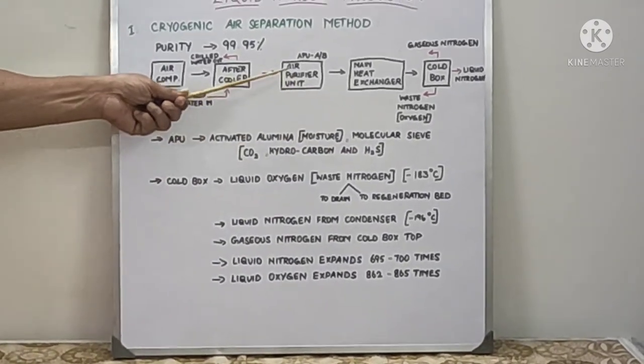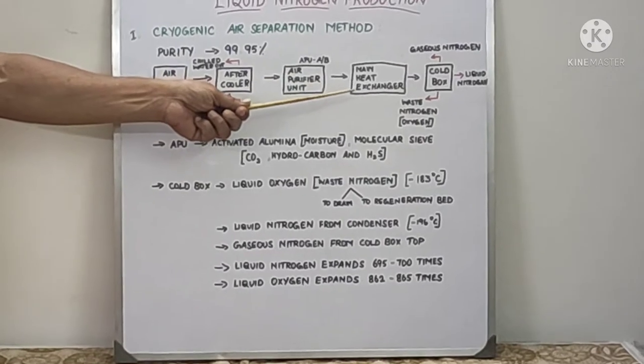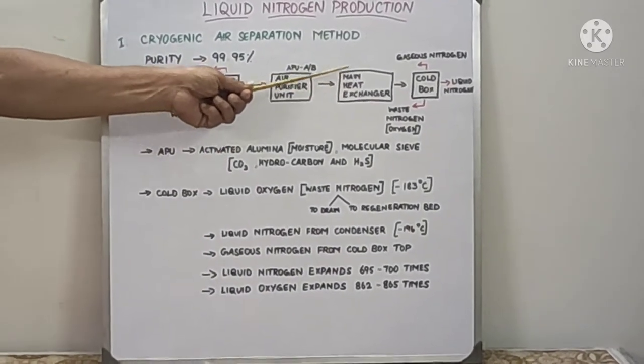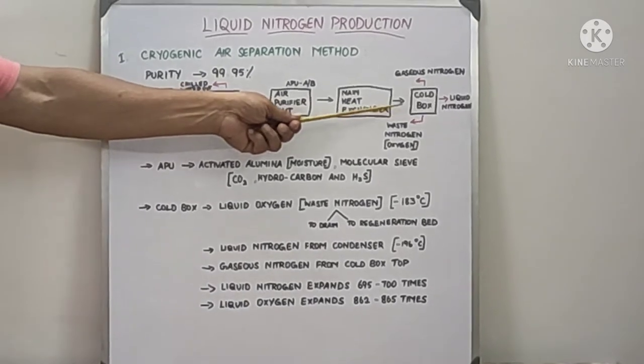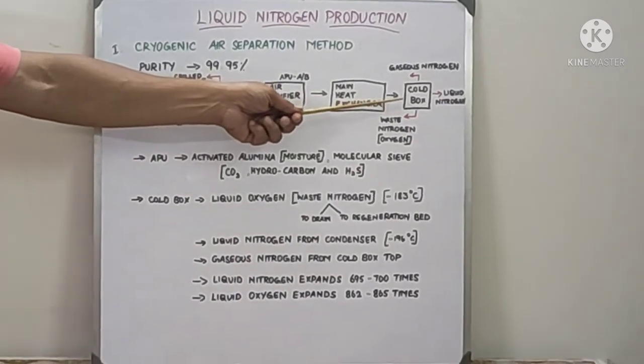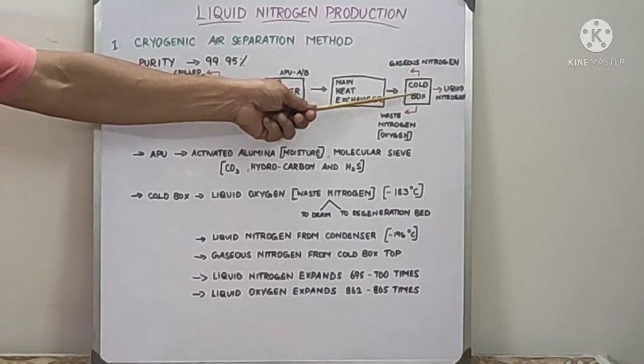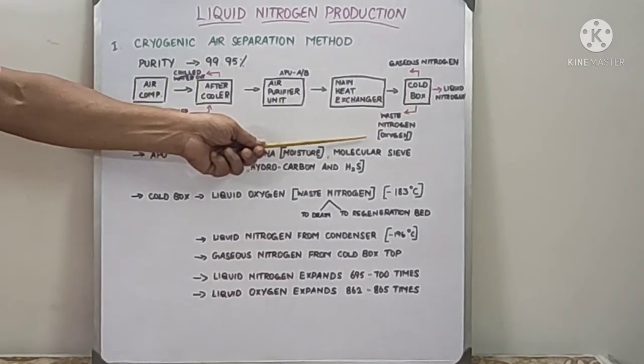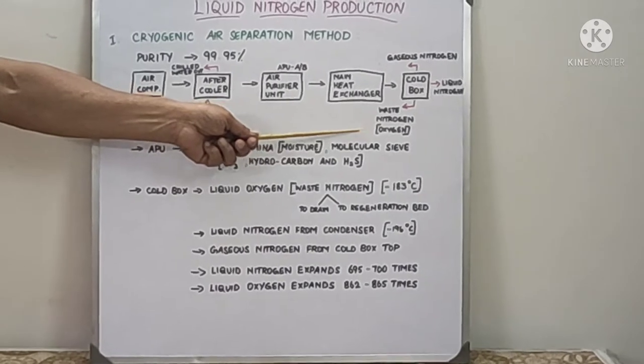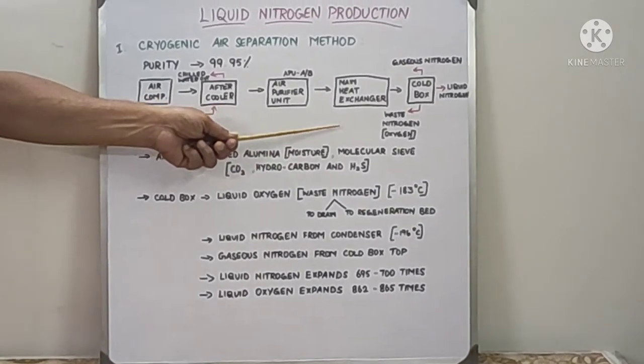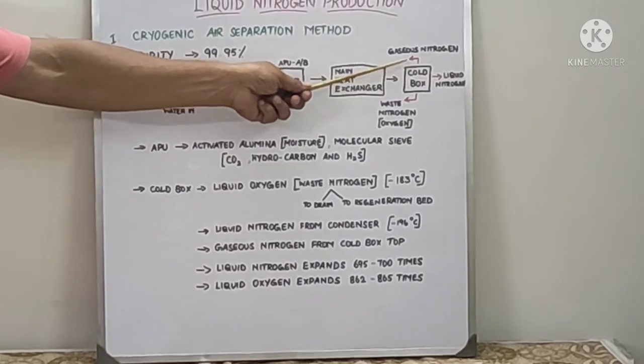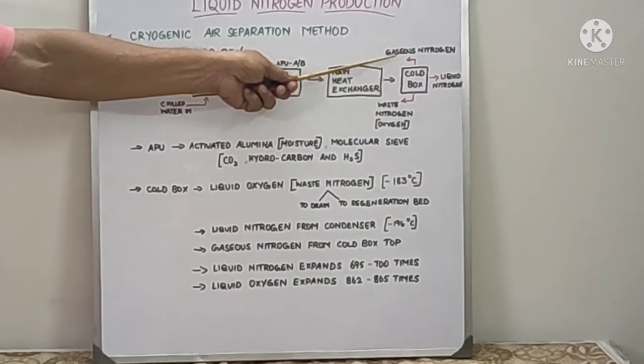After this, the air purifier outlet goes to the cold box via main heat exchanger. In the cold box, we are having two condensers and a high pressure column or rectifier. From there, you will get waste nitrogen or oxygen to vaporizer to drain or vent, and liquid nitrogen as a product. If you need gaseous nitrogen, it will be collected at the top.